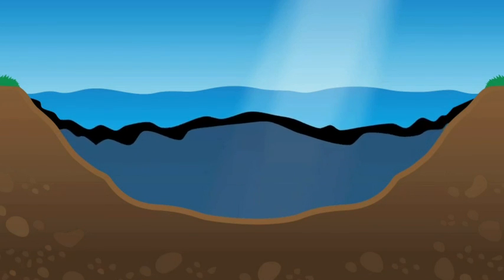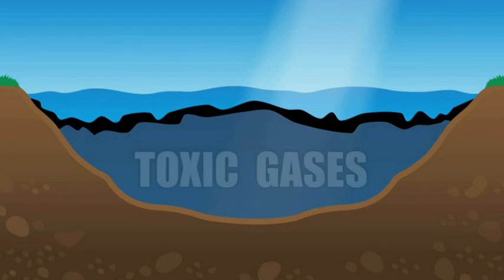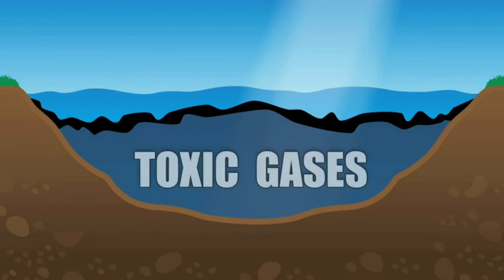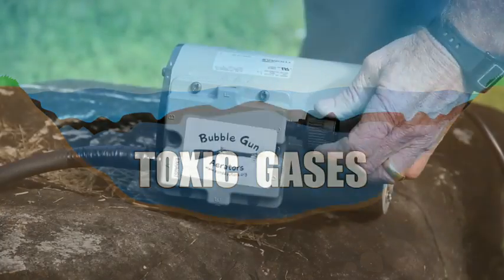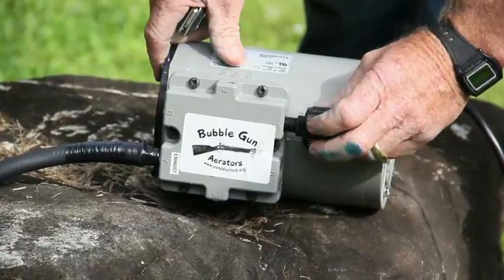At this point in time, the pond cannot oxygenate and life below cannot survive. The fish typically die of a combination of oxygen deficiency and toxicity.